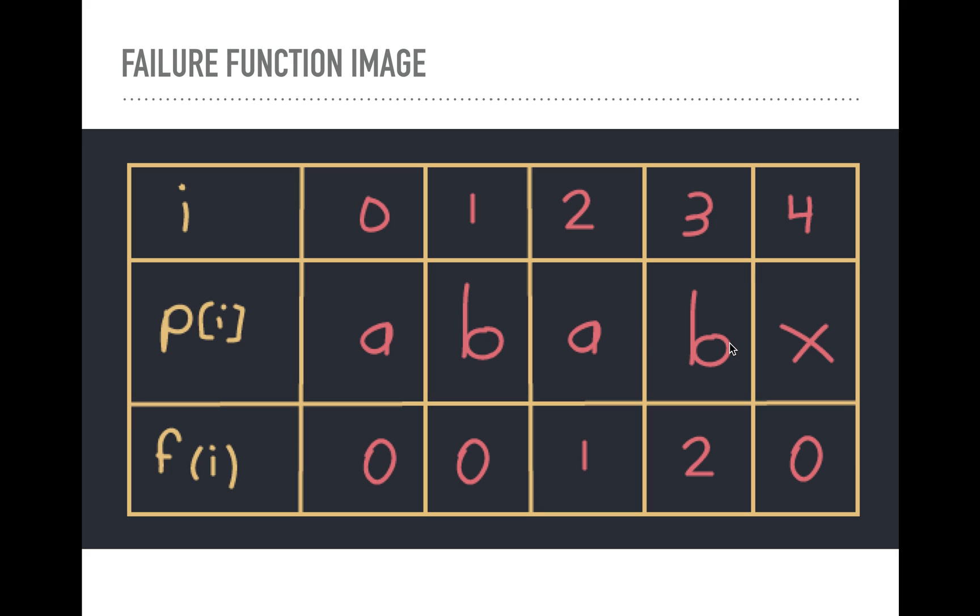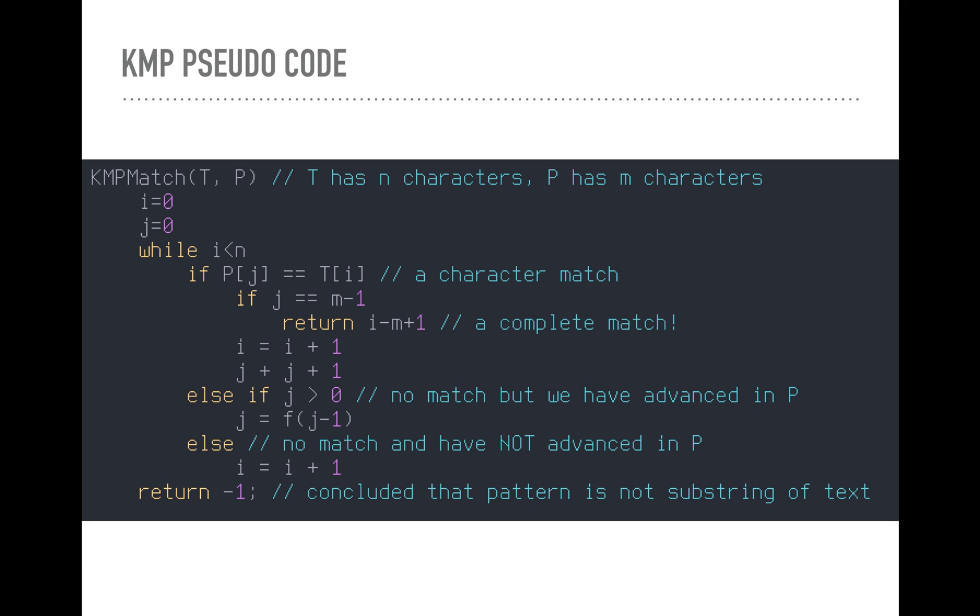But if this was another a, it might have been three because a, b, a. So it would have been three. But no, it's x. It's not a prefix. It ruins it. So we're at zero now. That's the failure function.